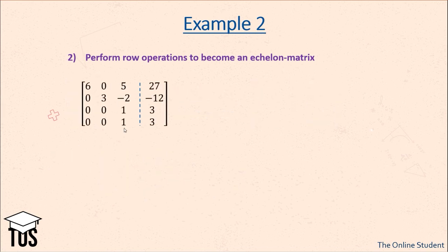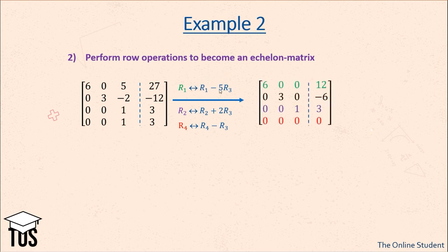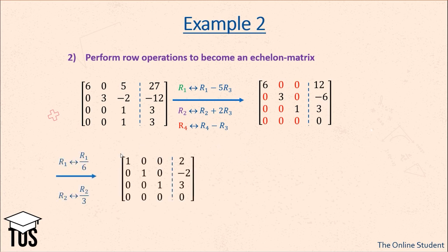Now let's get zeros above and below our leading elements in the third column. We perform: the first row becomes the first row minus 5 times the third row; the second row becomes the second row plus 2 times the third row; and the fourth row becomes the fourth row minus the third row. We now also have zeros above and below the leading element in the third column. We ensure all leading elements equal 1 — the first row is divisible by 6 and the second by 3 — giving us 1, 1, 1 as our leading elements and our final echelon matrix.